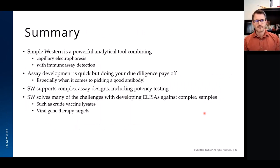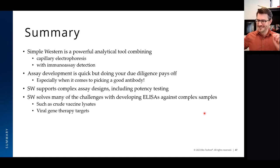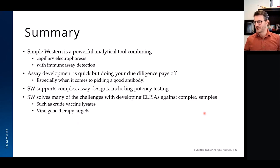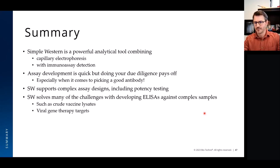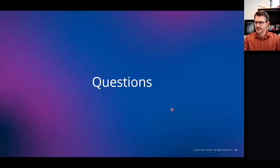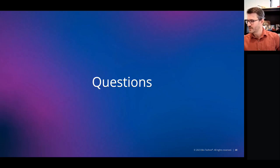To summarize: Simple Western is a powerful analytical tool combining capillary electrophoresis with immunodetection — it is not a western blot. Assay development is quick, but doing due diligence in antibody selection pays off enormously. Simple Western supports complex assay designs including potency testing, and we're seeing significant adoption with complex samples where ELISA has historically been difficult to apply — crude lysates, viral gene therapy targets, and similar challenging matrices.